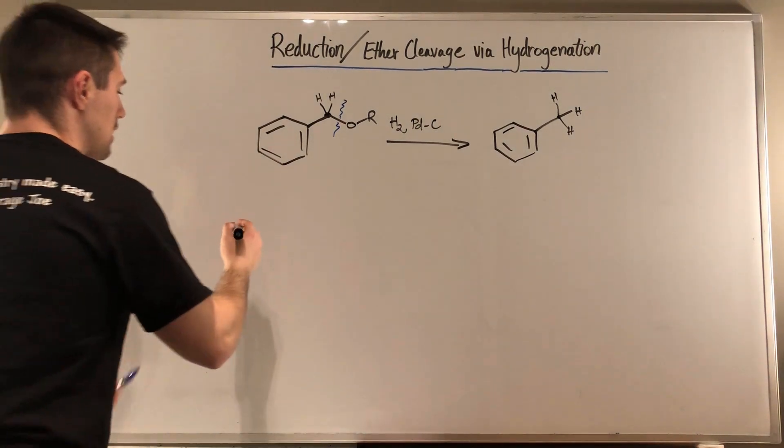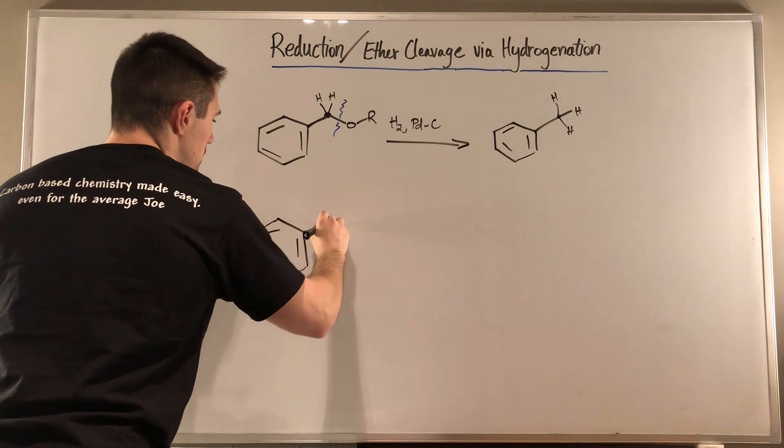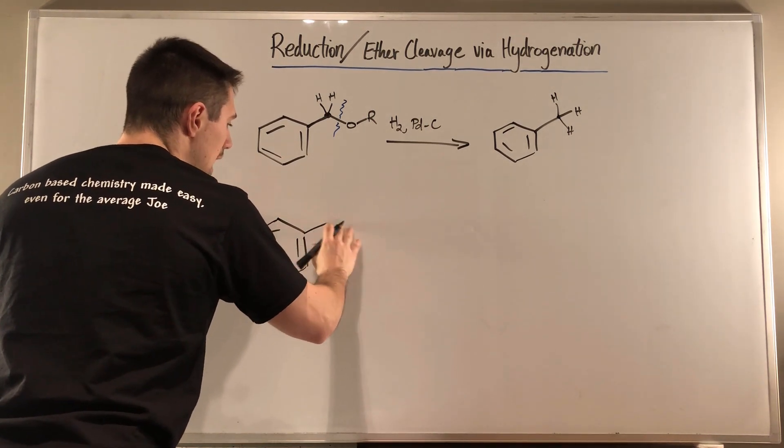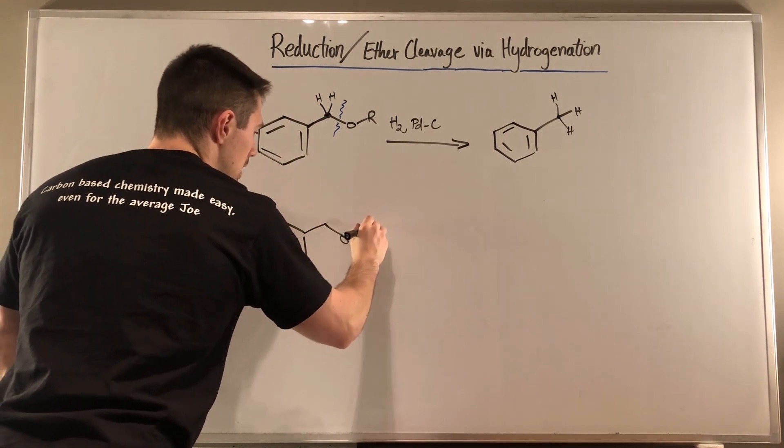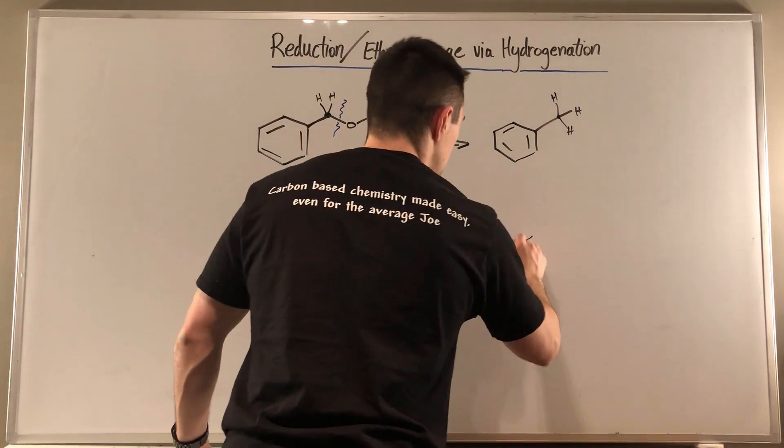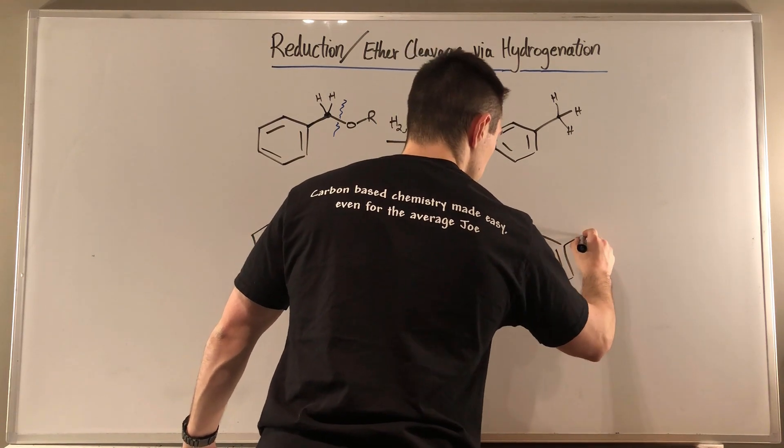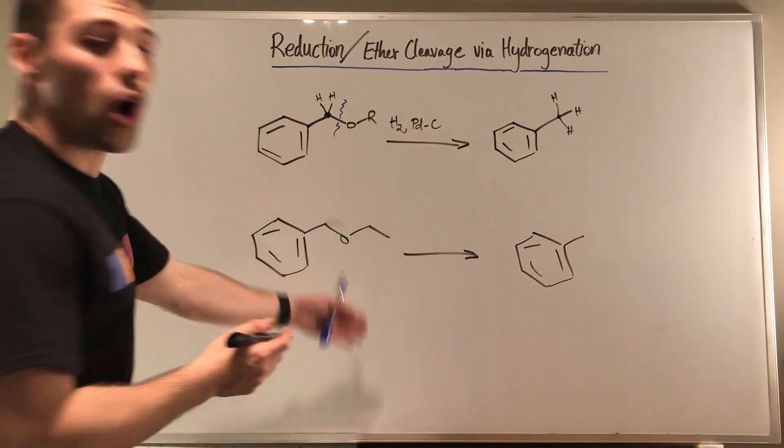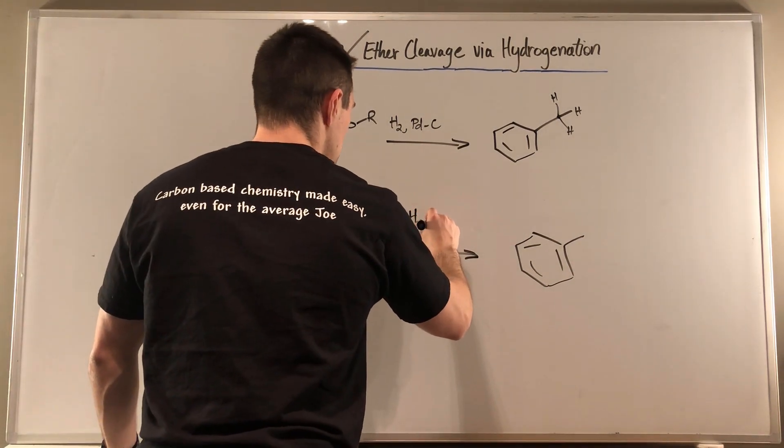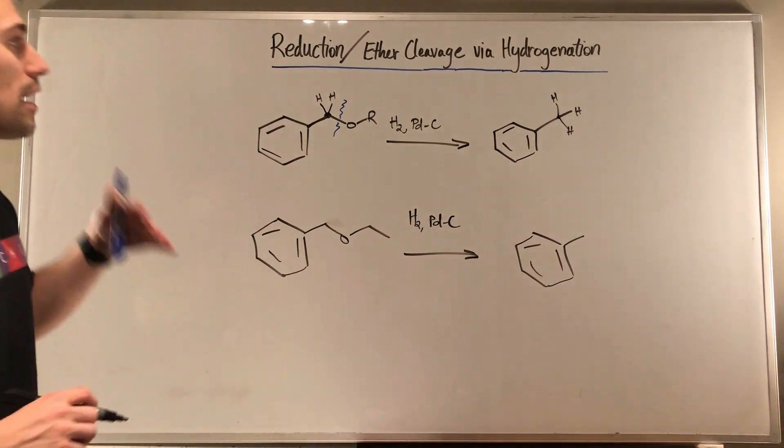So what would that look like in a complete reaction problem? Maybe you have some—Oh, I see, I was going to do it again. Maybe you just have this right here and maybe you needed to just make this happen, just get the toluene. Well, what you can do is just toss in some old H2, Pd/C, get the job done real quick.